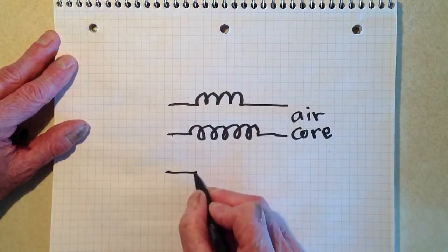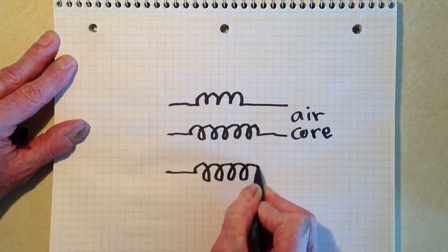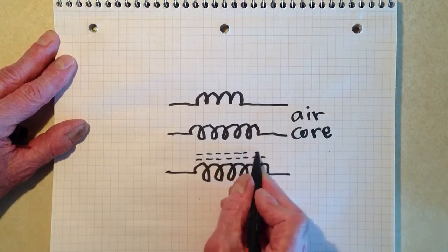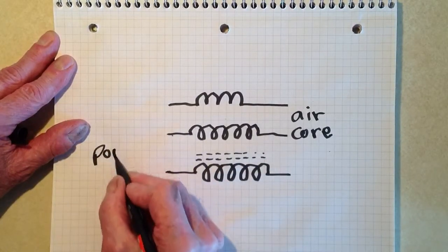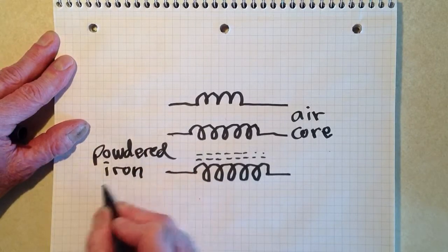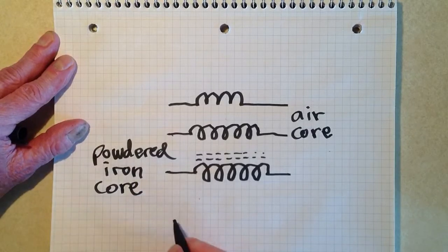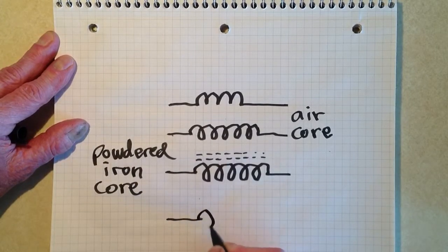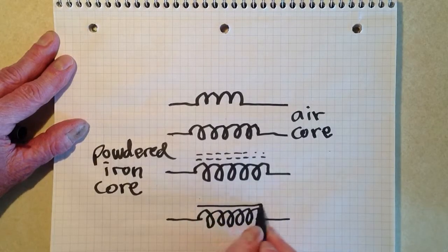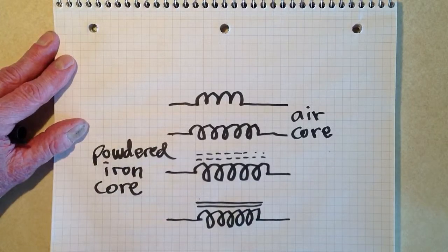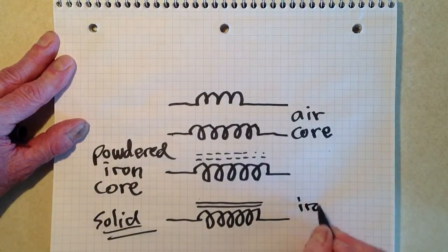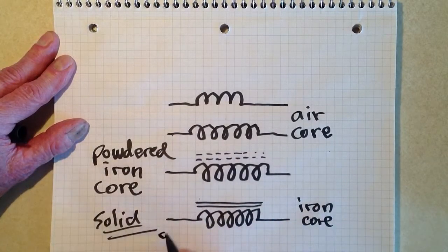If, on the other hand, you see an inductor symbol with dashed lines like this, it is a powdered iron core.